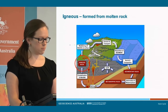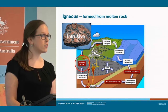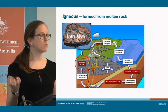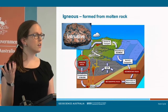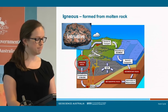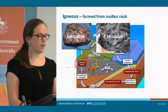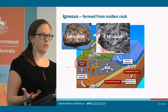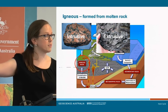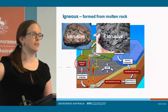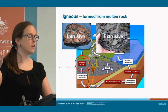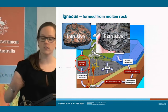Igneous rocks come in two varieties. We have intrusive igneous rocks that form from molten rock deep in the earth's crust, slowly cooling and forming large crystals over time. We also have extrusive igneous rocks, which happen when that magma comes to the surface forming lava, and it cools very rapidly, forming small crystals — sometimes too small to see. They can contain gas bubbles, like this basalt here.